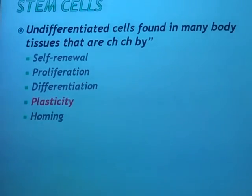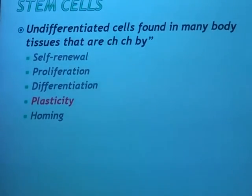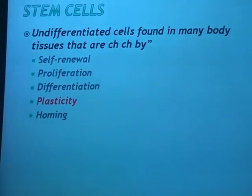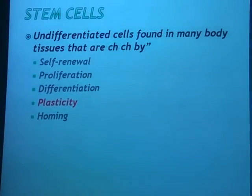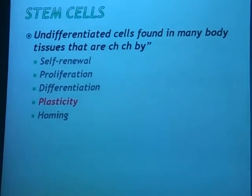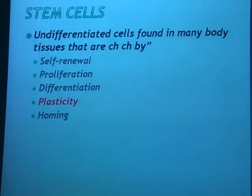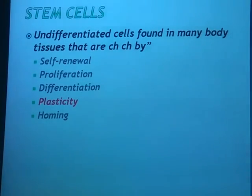Stem cells are undifferentiated cells found in many body tissues which are characterized by self-renewal, proliferation, differentiation, plasticity, and homing. The hallmark of stem cells is self-renewal, and the interesting characteristic of stem cells is plasticity.